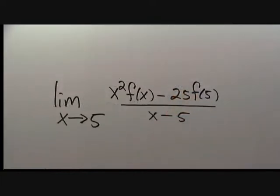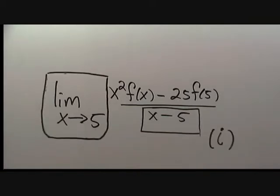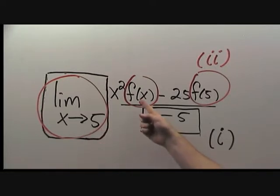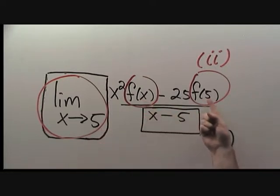There are two key features of this expression that will help us find a familiar pattern. The first feature is the combination of a limit as x approaches 5 and the expression x minus 5 in the denominator. The second key feature is the combination of a limit as x approaches 5 with the expression f of x minus f of 5.